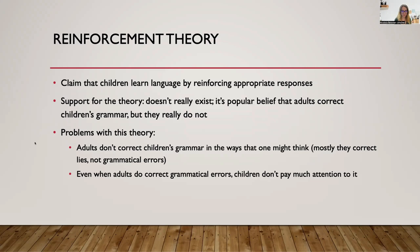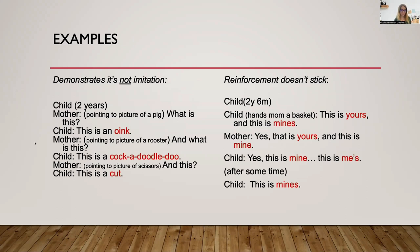When it comes to making a grammatical error, that's not corrected when production is not the same as adults. So let's look at some examples. This is a child who is two years old. The situation is the child and the mother are reading a picture book. Mother points to a picture of a pig and says, 'What is this?' And the child says, 'This is an oink.' Then pointing to a rooster: 'What is this?' — 'This is a cock-a-doodle-doo.' And what's this, pointing to scissors? — 'This is a cut.' Clearly those are not the names of those animals and objects.